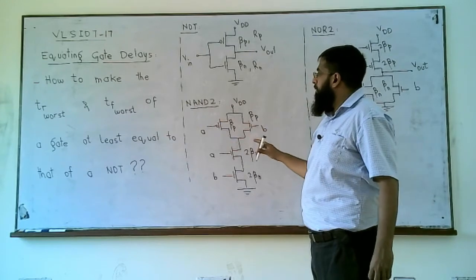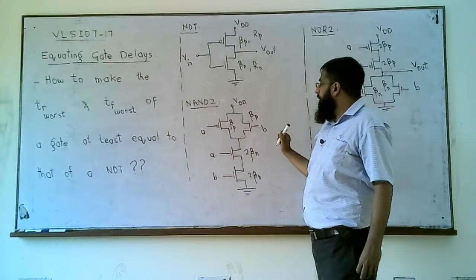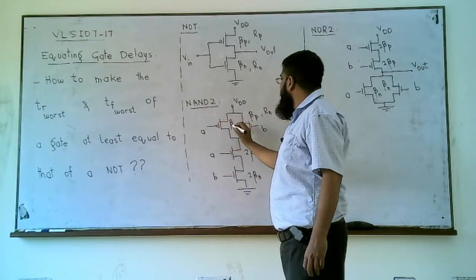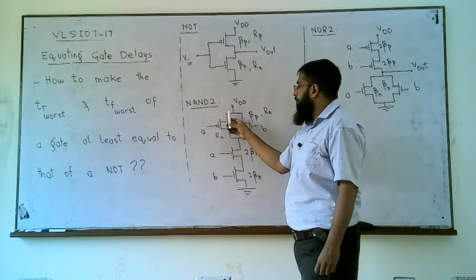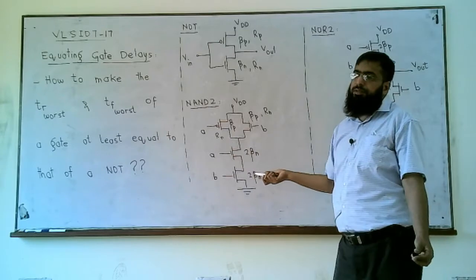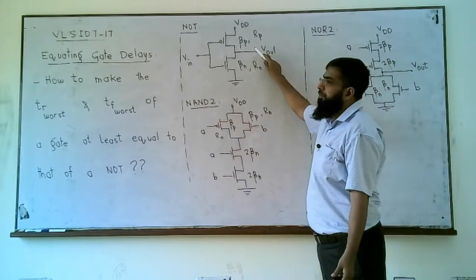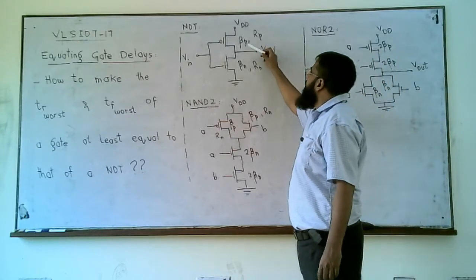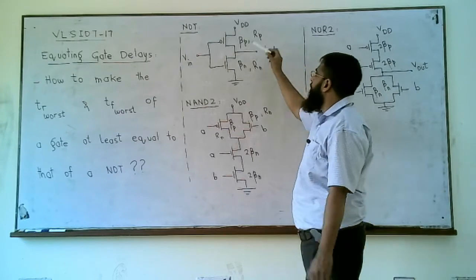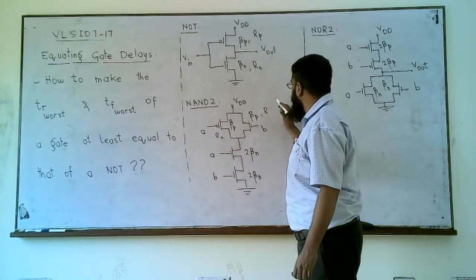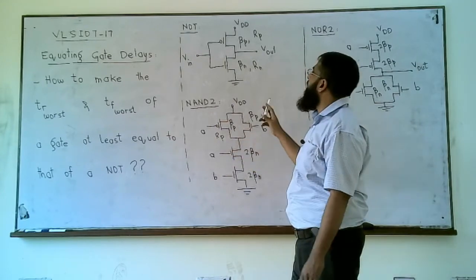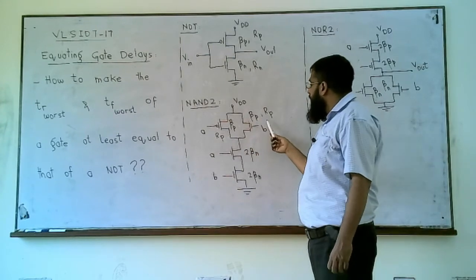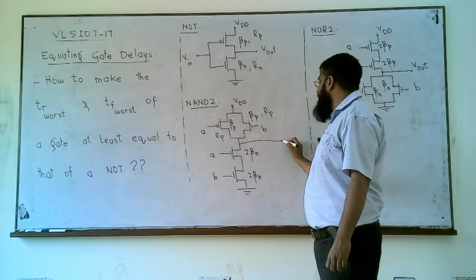For a NAND2, in order to have the worst case rise time delay at least equal to that of a NOT gate, we must have at least r_n when the NMOS array is on. If both pMOS transistors are beta_p, each offers r_p. If only one input A is on, the resistance at the output is r_p. So the worst case rise time delay equals that of a NOT gate, because only one r_p is in the path.